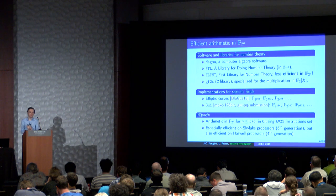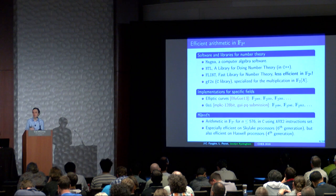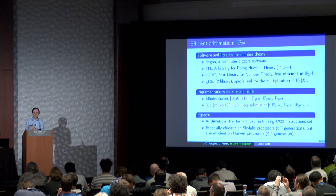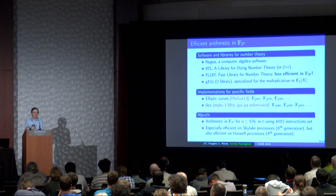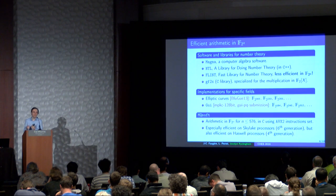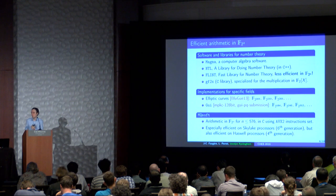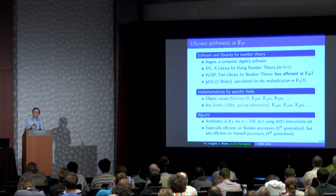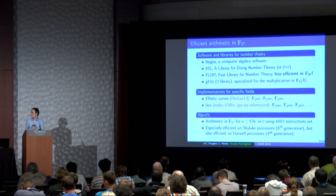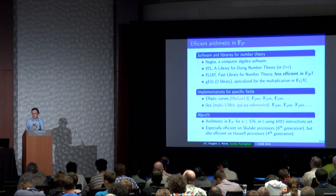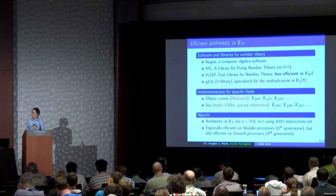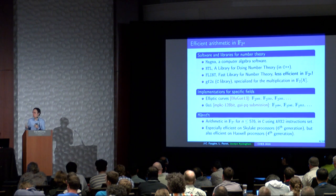We have generic libraries. For all values of N we have implementations of the arithmetic. We have Magma, a computer algebra software. We have NTL, a C++ implementation that is really efficient. We have also Flint, a C implementation, but Flint is not adapted to the binary field. Then we have GF2X, a specialized library just for multiplication in GF(2)[X]. We also have implementations for specific values of N: the context of binary elliptic curves with five standardized values of N, a specific implementation for these, and also a specific value of N for NESSIE implementations. With MQSoft, we have a generic implementation up to N equal to 576. We use a C implementation with AVX2 instructions to improve the library, specialized for Skylake Intel processors but also recently for ARM processors, and generally efficient for all Intel processors.